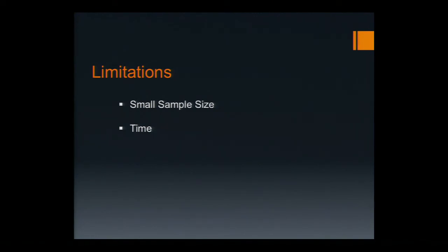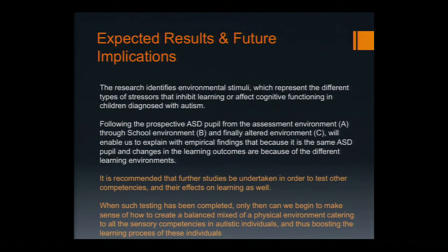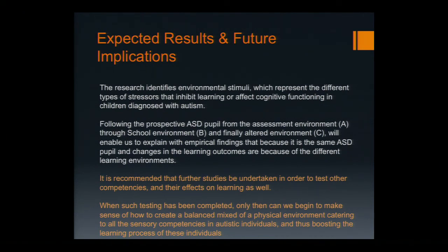Limitations include a small sample size and time constraints. The expected results and future implications: the research identifies environmental stimuli representing different types of stresses that inhibit learning or affect cognitive functioning in children diagnosed with autism. Once we've tested one variable and come up with a holistic outcome, we should test other environmental variables for these children — pairing each symptom with an environmental variable — to produce a proper guideline for architects and designers that can be utilized for design purposes.